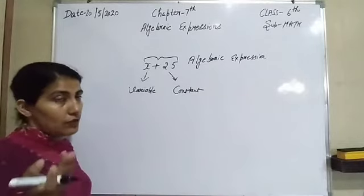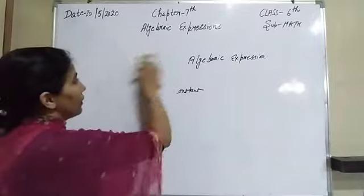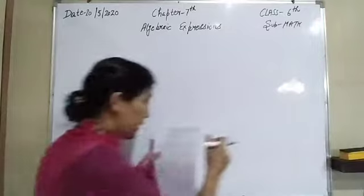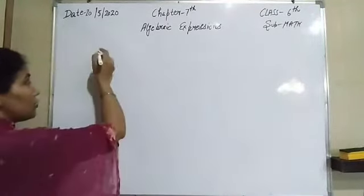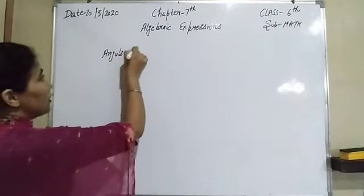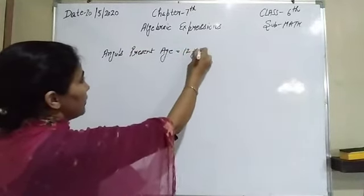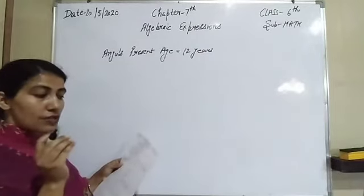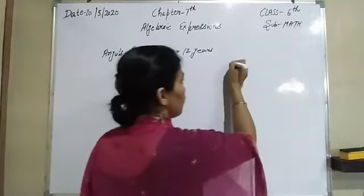Now come to the first question of this exercise. It is one of the easiest chapters. The first question is: Anju is 12 years old. Anju's present age is equal to 12 years. Write Anju's age in terms of the following: five years ago, y years ago, after eight years, and after y years.